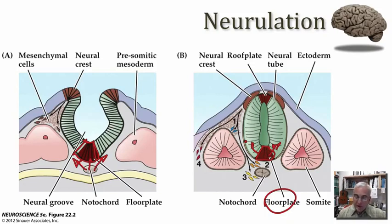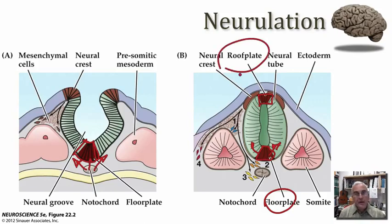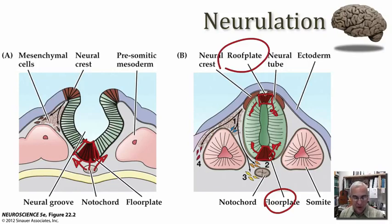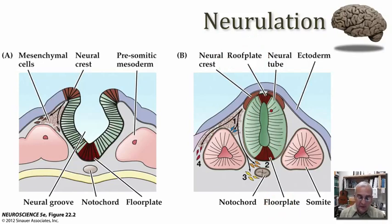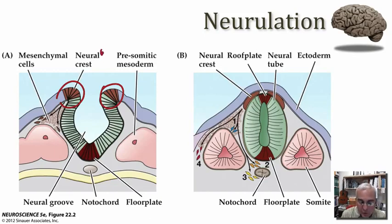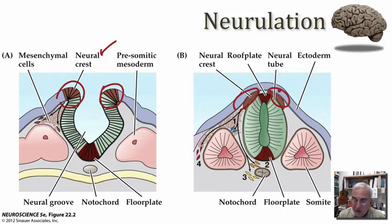Another special region that responds to inductive signals is found on the dorsal side of this developing neural tube — we call that the roof plate. The roof plate gives rise to signals that will influence the dorsal aspect of the epithelium forming the walls of the neural tube. Additionally, in the ridge of this folding neural tube that begins to come together, there is a special population of cells called the neural crest. The neural crest actually pinches off from the margins of the neural plate as the neural tube is forming, and ends up sitting just along the dorsal and lateral margins of the neural tube once that tube has formed.